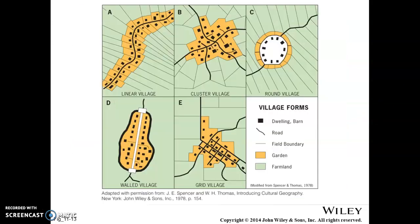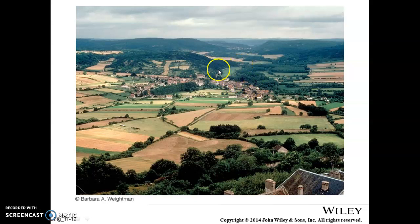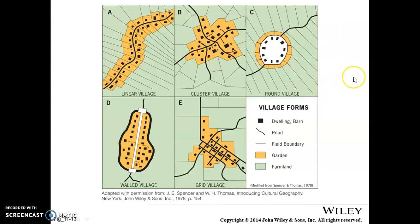In our next slide we're looking at several different types of villages — again, this might be a question on the AP test. There are different kinds of villages depending on where they are, what the purpose is, and the type of land available. In low-lying areas of particularly Western Europe, you'll see a type of linear village. There's a river or road running through the area, and this is a linear type village where people have their houses on either side of the road. They have a small garden area for personal use, and then the farmland goes directly behind them.